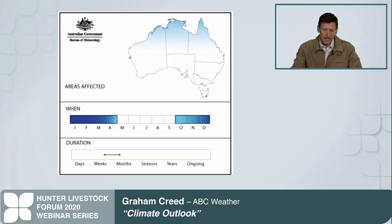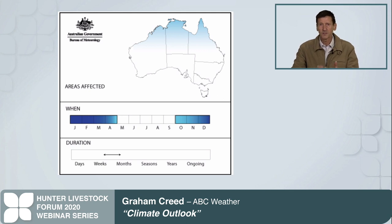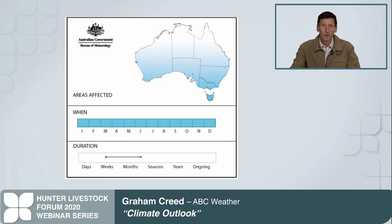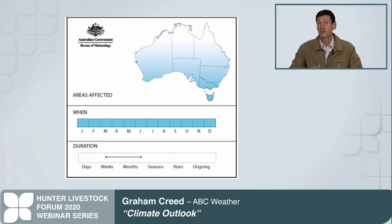The Madden-Julian Oscillation is a tropical system - basically a wave of instability that moves off the African continent, traverses the equator, and as it moves towards us it increases the instability through the atmosphere. What that does is it can lead to increased monsoonal activity, tropical cyclones, and some of that moisture can be brought down into New South Wales, bringing the potential of some widespread heavy rainfall. The Southern Annular Mode is basically an interaction of winds between the upper atmosphere and the lower parts of the stratosphere. What this does is mean that cold fronts will either be closer to the mainland or further south from the mainland - again affecting the amount of moisture we see from these cold fronts. In years where they're less active, we typically see less rainfall.